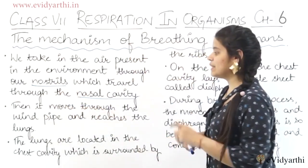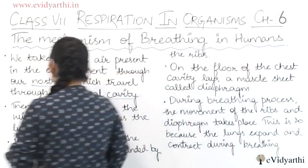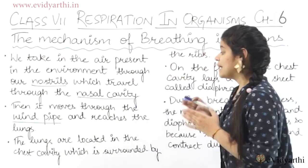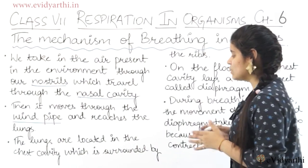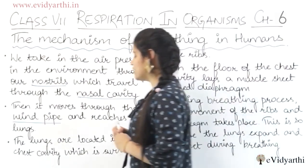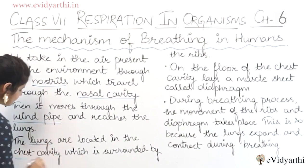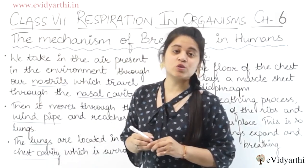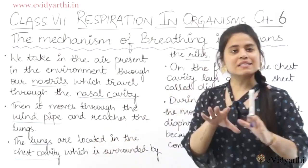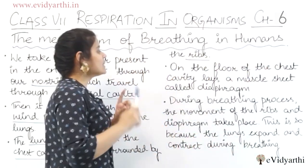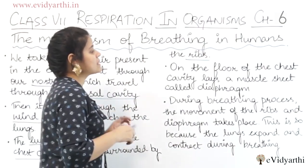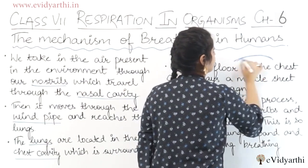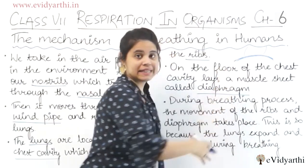Then the air moves through the windpipe and reaches the lungs. The lungs are located in the chest cavity, which is surrounded by the ribs on the sides. The body lays a muscle sheet called the diaphragm, which is located below our lungs.